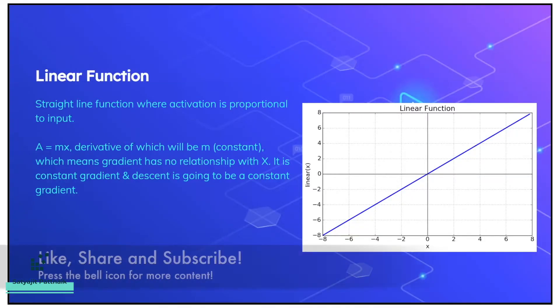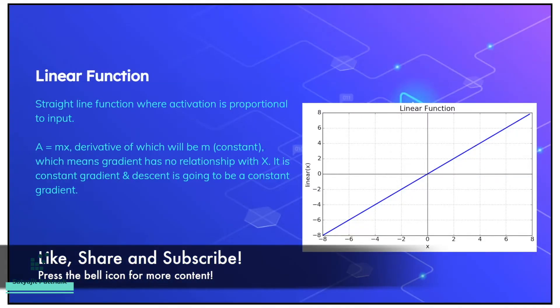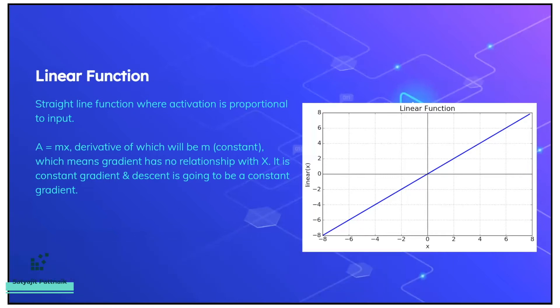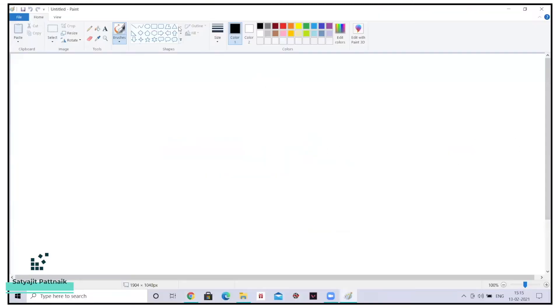So today's topic, as I already told you, it's going to be linear activation function. Let's try to understand what is a linear function. As the name suggests, it's a straight line function where activation is proportional to input. This particular example is an example of y equals mx because I don't have the c variable. So before understanding the linear function, let's try to understand what is linear.